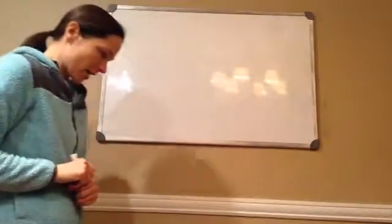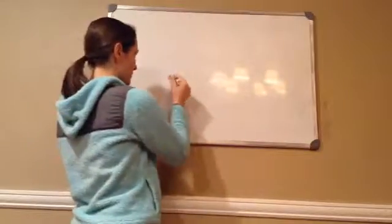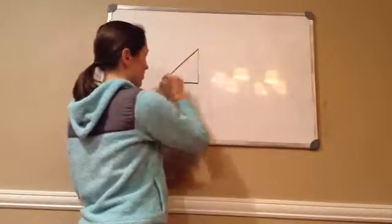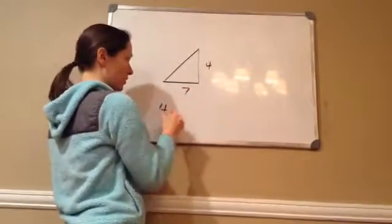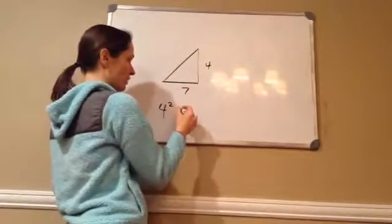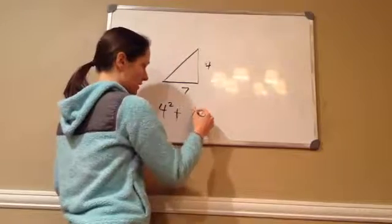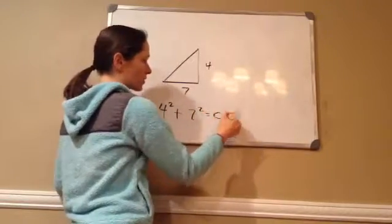Earlier, last lesson, you learned the Pythagorean Theorem, right? And we learned that if something was A, 4 squared, plus B, 7 squared, equals C squared.